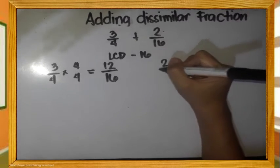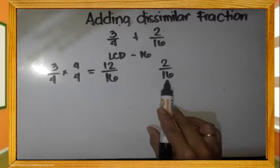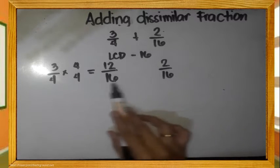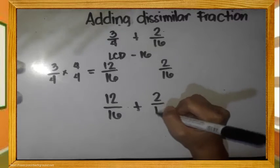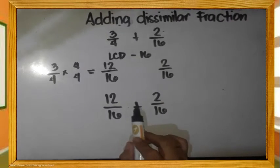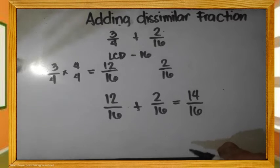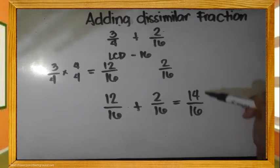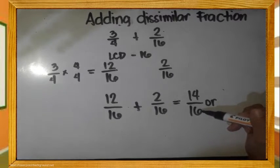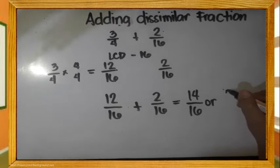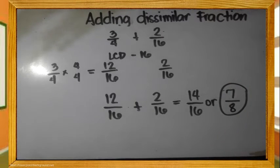Rename 2 sixteenths — the denominator is already 16, so we multiply by 1, and it stays the same. Now they are similar and we can add. 12 plus 2 equals 14. Copy the denominator, 16. Do not forget to simplify. What can divide both 14 and 16? We can divide by 2 — 14 divided by 2 is 7, and 16 divided by 2 is 8. So the final answer is 7 eighths.